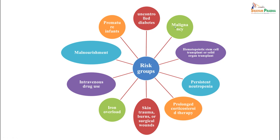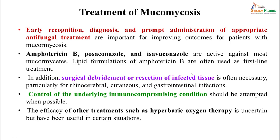Risk groups for mucormycosis include uncontrolled diabetes, malignancy, stem cell transplantation, persistent neutropenia, prolonged corticosteroid therapy, skin trauma, burns, surgical wounds, iron overload, IV drug use, malnourished patients, and premature infants. Early recognition, diagnosis, and prompt administration of appropriate antifungal are important because of the angioinvasive nature of the fungus. Amphotericin B, posaconazole, and isavuconazole are active against most mucomycetes; lipid formulations of amphotericin B are often used as first-line treatment. Surgical debridement or resection of infected tissue should be done particularly for rhinocerebral, cutaneous, and gastrointestinal infections. Control of the underlying immunocompromised condition is also necessary, and hyperbaric oxygen therapy may be used as symptomatic supportive treatment. Overall mortality is approximately 50%, though early identification and treatment can lead to better outcomes.